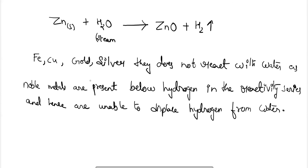This was the reaction of metals with oxygen and water. In the next class we are going to discuss the reaction of metals with dilute acid, with other metal salt solutions, and also the reaction of metals with non-metals — which covers the chemical properties of metals. For today's class I am ending here, we will meet in the next class. Thank you.